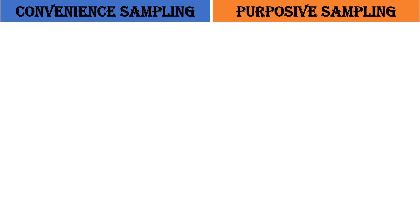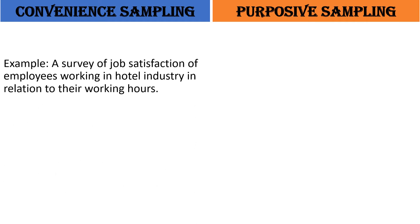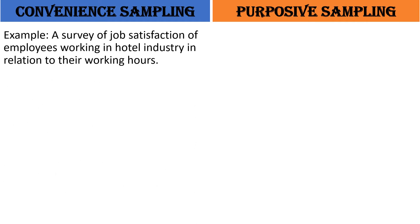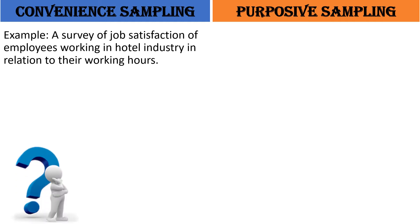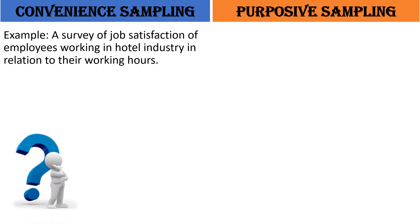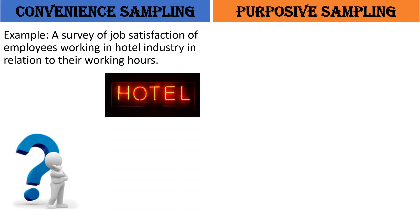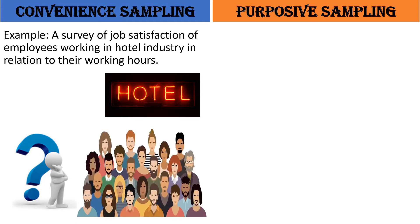Let me make you understand through examples. In convenience sampling, the example is a survey of job satisfaction of employees working in a hotel industry in relation to their working hours. Now if I want to collect sample through convenience sampling method, I would approach those hotels which are near to me, or collect data from those employees who are easily accessible to me. I will keep on collecting data from the very first hotel employee I interact with till I reach my desired sample size.